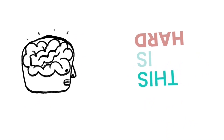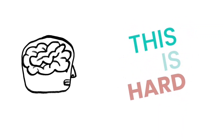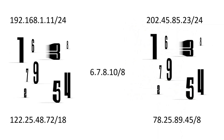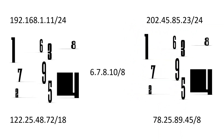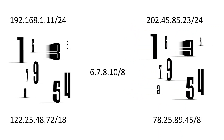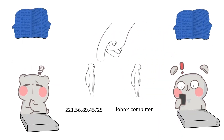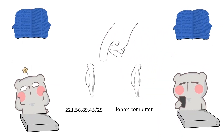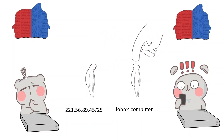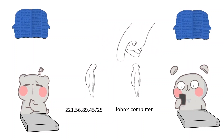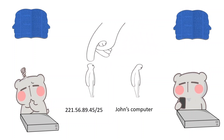Generally, IP addresses are difficult for humans to remember. IP addresses are made of numbers. Instead of numbers, humans prefer names to identify and access objects on the network.